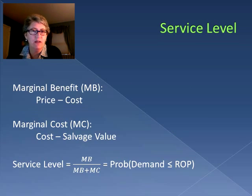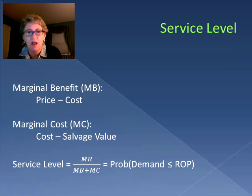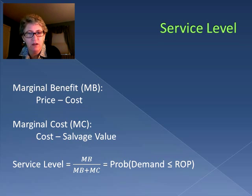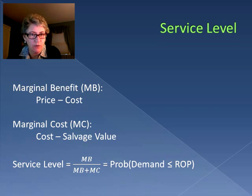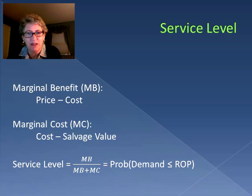To do that, we need to understand the marginal benefit, abbreviated MB. The marginal benefit is the price — what we can sell the unit for — versus how much it costs us. So price minus cost is our marginal benefit. The marginal cost is how much it costs us to acquire the item in the first place, minus the salvage value — what we can get for the unit at the end of the season.